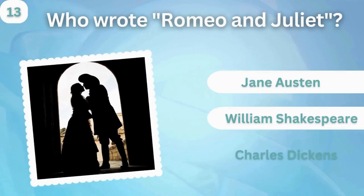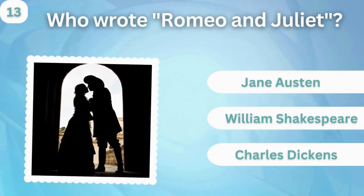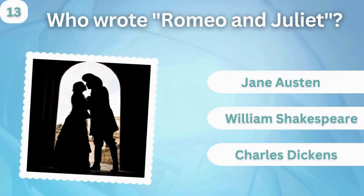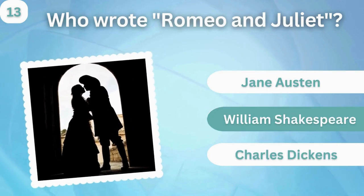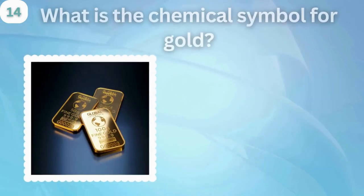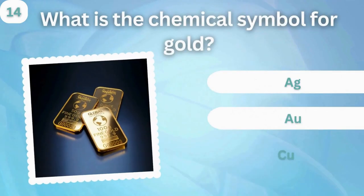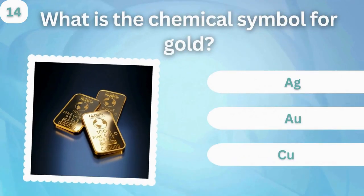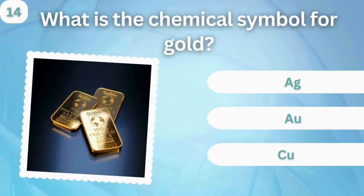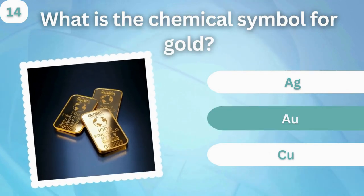Who wrote Romeo and Juliet? Jane Austen, William Shakespeare, or Charles Dickens? William Shakespeare. What is the chemical symbol for gold? Ag, Au, or Cu? Au.